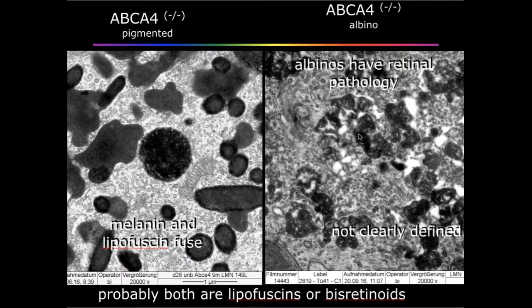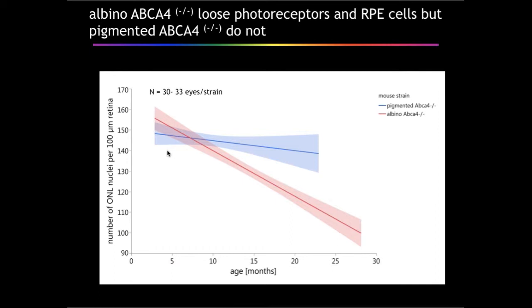They are not clearly defined compared to the lysosomes in the pigmented mouse. Probably both of these materials inside the lysosomes consist of lipofuscin and bisretinoids, but they look completely different and are probably also chemically different. If you compare the retinal degeneration in these two mouse strains, we can see that the pigmented ABCA4 knockout mice don't develop retinal pathology — the small decline is normal aging over time. In the albinos, it's completely different: we have huge degeneration and loss of photoreceptors, and this, without any doubt, is caused by the melanin pigmentation in the pigmented line.